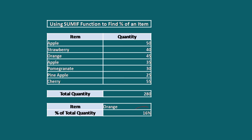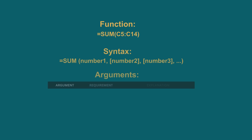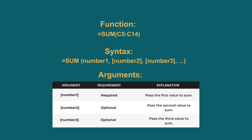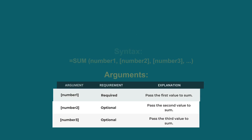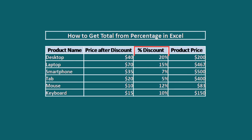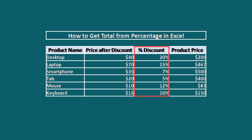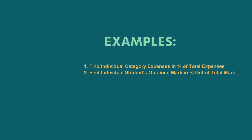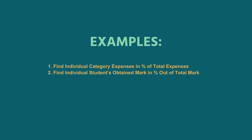I'll use the SUM function to get the total value first, and then we'll divide the individual value by the total to get the percentage of total. I'll demonstrate it with two real-life examples.